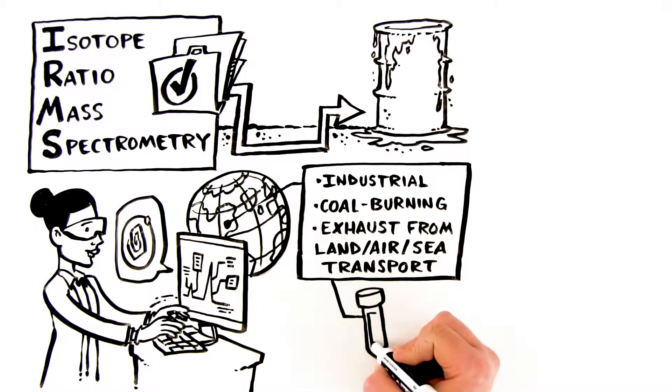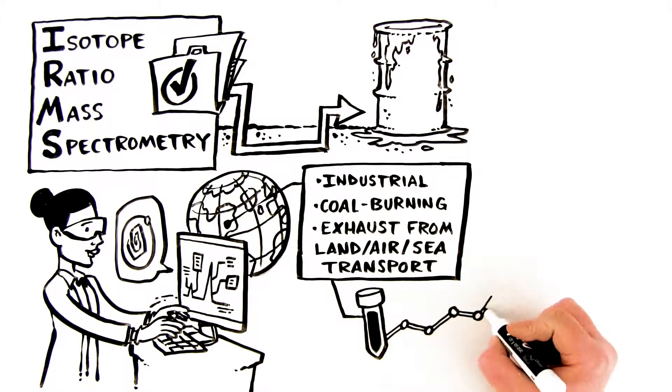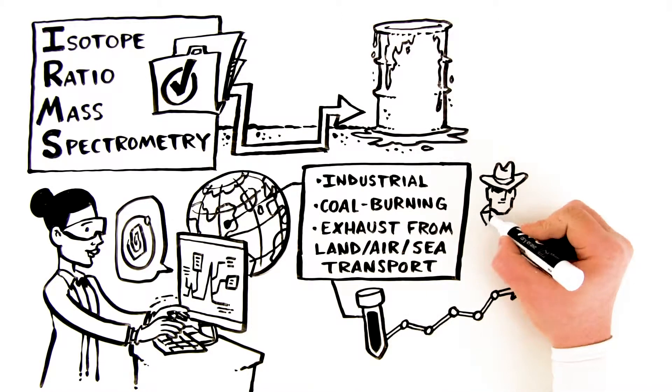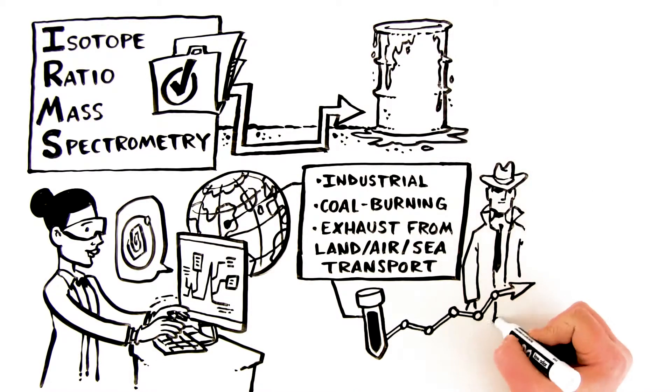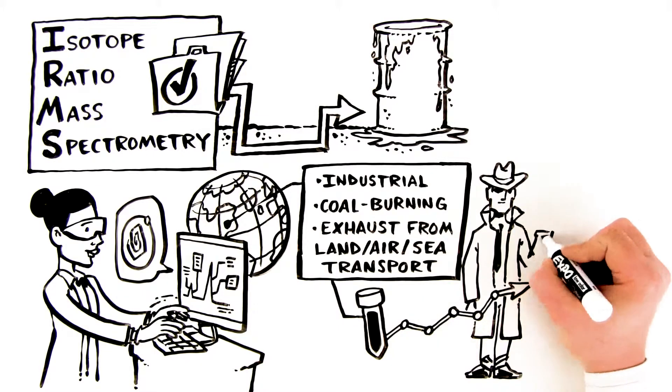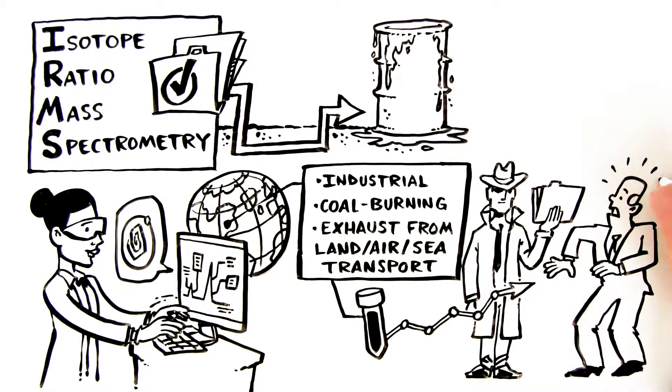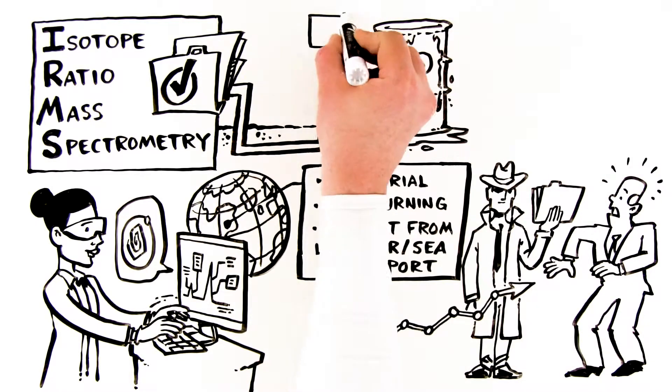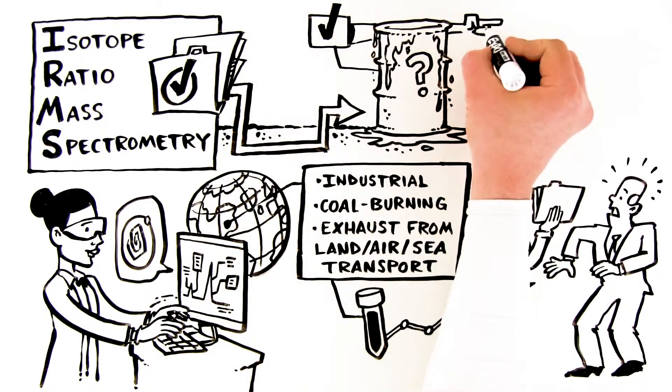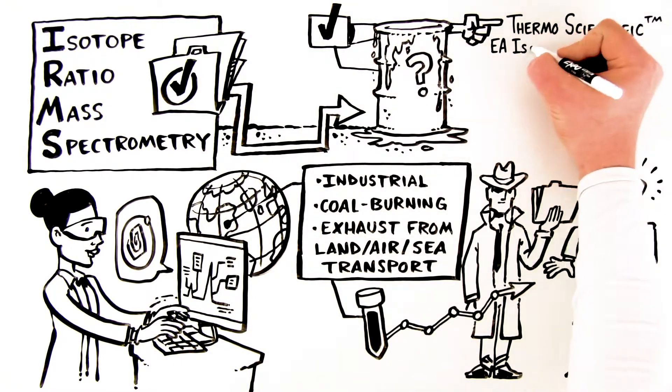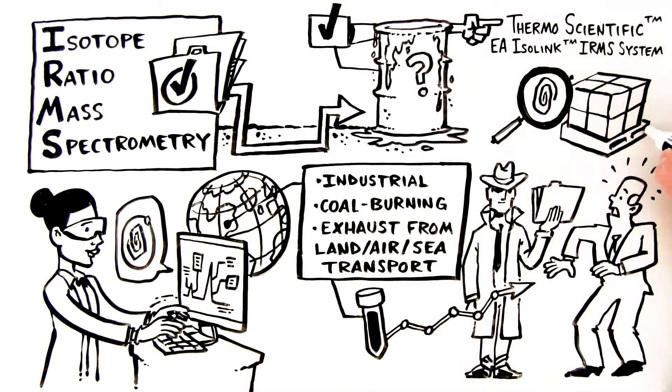All of these details and more are hidden within your samples. They allow us to monitor change and crack down on polluters. And rest assured, no matter the kind of sample or environmental challenge, Thermo Fisher Scientific has the right gear for every investigation. The Thermo Scientific EA Isolink IRMS System for analyzing bulk samples.